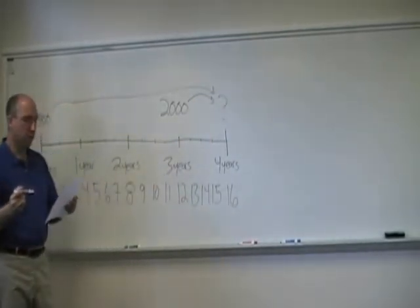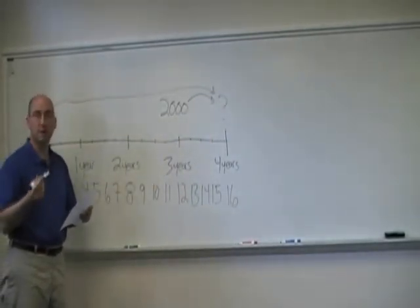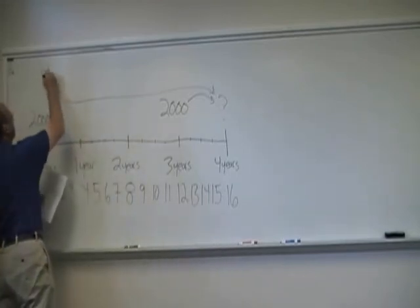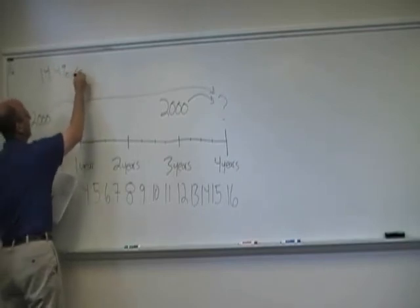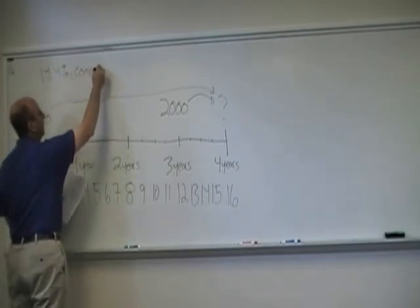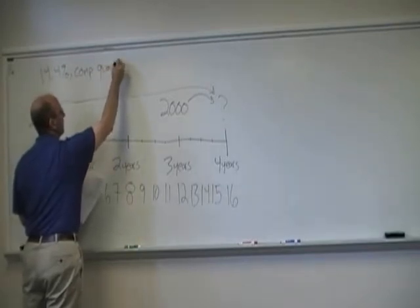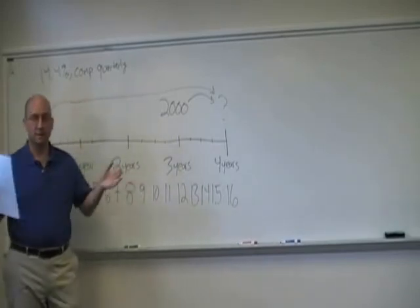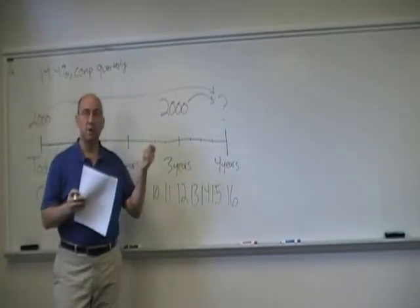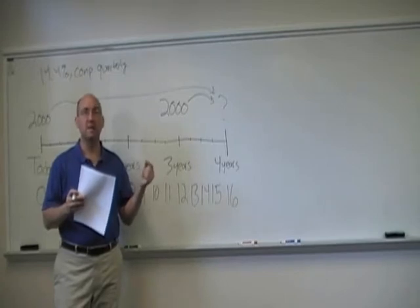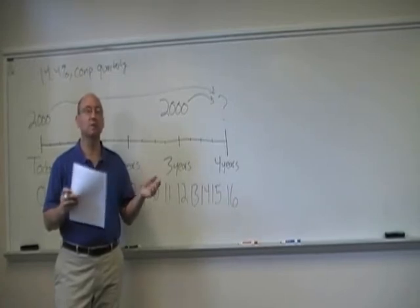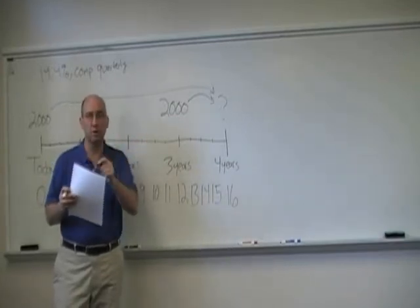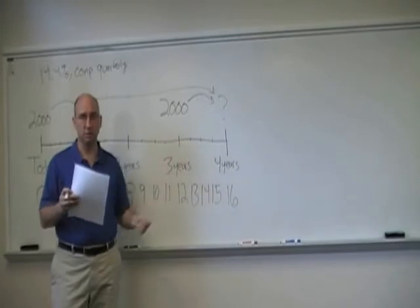She can earn 14.4% per year, however, it's compounded quarterly. Whenever you see a compounding frequency that's less than a year, some red flags should go off thinking, I need to be careful with my timeline. Or whenever you see a compounding period that's more common in frequency, shorter in duration, shorter in length than how often cash flows go.